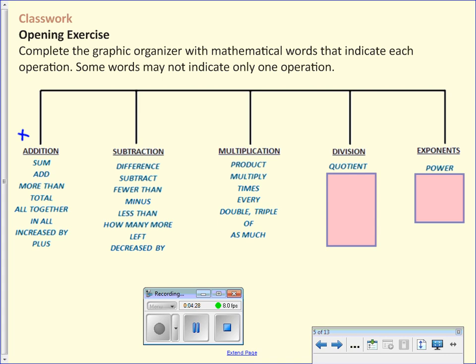Quotient. For division. Quotient. What else? Split. Per. I have 24 cookies. I have three cookies per student. How many students will get cookies? None, because I'll eat them all.